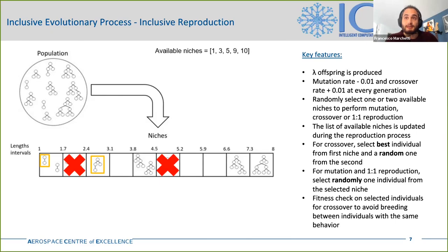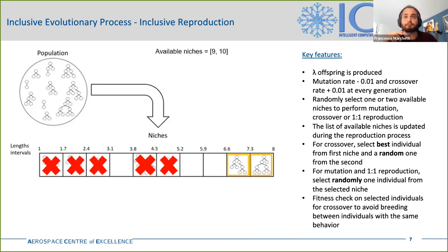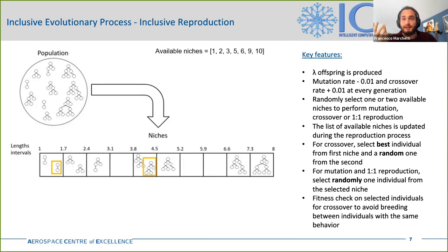By proceeding, the list of available niches is updated by removing the niches already selected. When mutation is selected, a random individual is picked from the chosen niche. The individual is selected randomly since it is not guaranteed that applying mutation to the best performing one leads to better results. The list of available niches is then updated again and the process continues. The same reasoning applies when one-to-one reproduction is selected, meaning the individual is passed unaltered to the offspring. When all niches are selected, the list is reset to its initial state and the process goes on until Lambda individuals are produced.